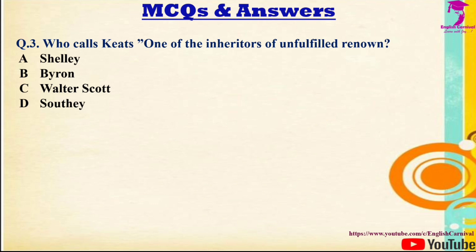Question 3: Who calls John Keats 'one of the inheritors of unfulfilled renown'? Correct answer is A — Shelley, P.B. Shelley.